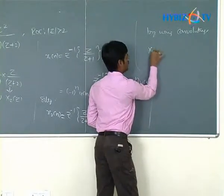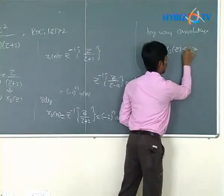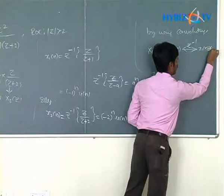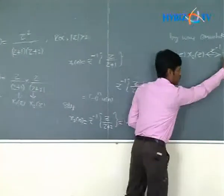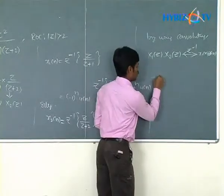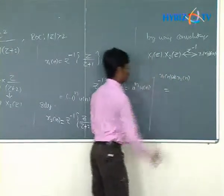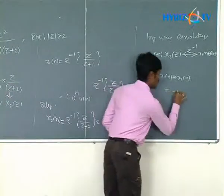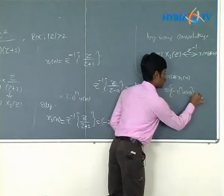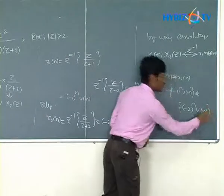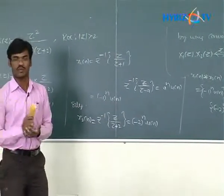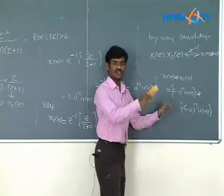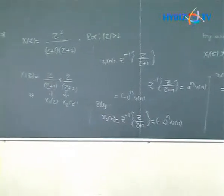The inverse Z transform of X1(Z)·X2(Z) gives X(n) = X1(n) * X2(n), where * denotes convolution. The discrete convolution formula is: X1(n)*X2(n) = summation over k from 0 to n of X1(k)·X2(n−k). This is analogous to the continuous case which uses integration; in the discrete case we use summation, since discrete signals are countable and finite.